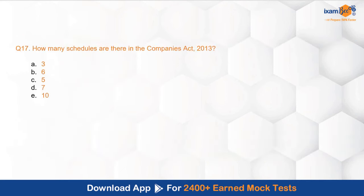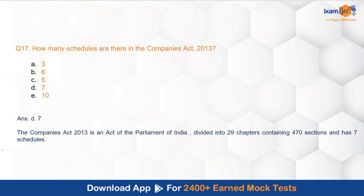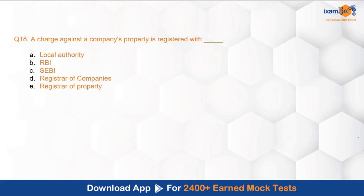The next question asks how many schedules are there in the Companies Act — one of the very basic and important questions. Generally, when we prepare, we ignore such questions assuming that the number of schedules, sections, or enactment dates won't be asked. But as you can see, this basic question has come up. The correct option is D — seven schedules. The Companies Act is an Act of Parliament divided into 29 chapters, 470 sections, and 7 schedules.